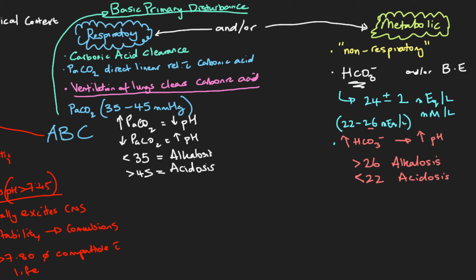To summarize: once we've identified from the A part of the ABC that there is an acid-base disturbance, we need to figure out what's causing it. It can be a respiratory cause — relating to PaCO2, where increasing CO2 decreases pH and decreasing CO2 increases pH. Or it can be a non-respiratory (metabolic) cause, typically relating to bicarbonate. Greater than 26 mEq/L bicarbonate gives alkalosis; less than 22 mEq/L gives acidosis.